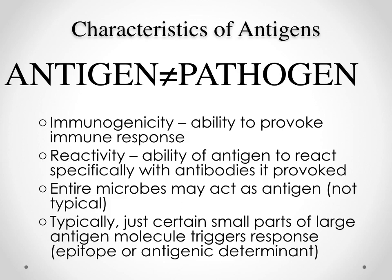What we have to remember, and this is where a lot of books get things mixed up, is that antigens don't equal pathogens and pathogens don't equal antigens. In order to be a pathogen, we have to have two key features: they have to induce an immunogenic response — they have to provoke an immune response — and they have to induce immune reactivity. That is, the antigen itself has to specifically trigger antibodies once the immune cell, in particular the B cell, gets provoked.